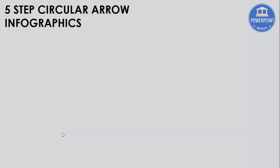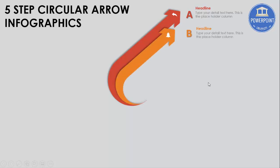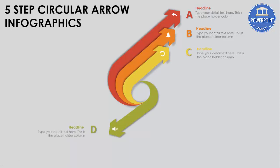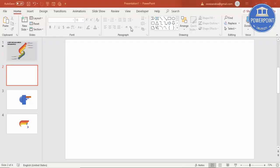Welcome to my YouTube channel PowerPoint University. In this tutorial, I'm going to show you a five-step circular arrow infographic slide in PowerPoint. When I click, it will show you the first arrow with the icon and the text, then the second, then the third arrow, then two more options at the bottom which are D and E.